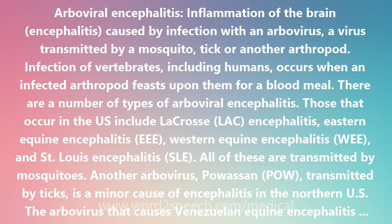There are a number of types of Arboviral Encephalitis. Those that occur in the U.S. include La Crosse encephalitis (LAC), Eastern Equine Encephalitis (EEE), Western Equine Encephalitis (WEE), and St. Louis Encephalitis (SLE). All of these are transmitted by mosquitoes.